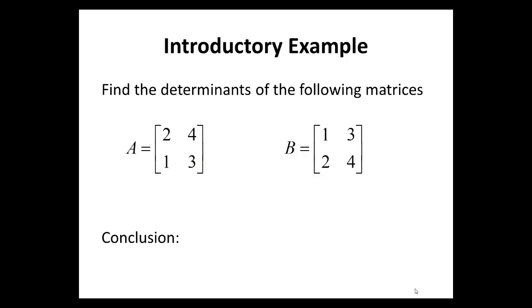Introductory Example 1. Find the determinants of the following matrices A, B. Observe that we have simply interchanged rows 1 and 2 in matrix A to get matrix B. That is, we have performed an elementary operation on matrix A to get matrix B.